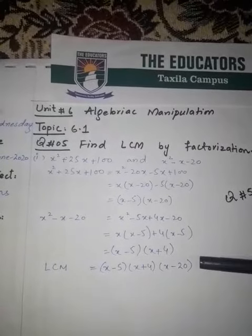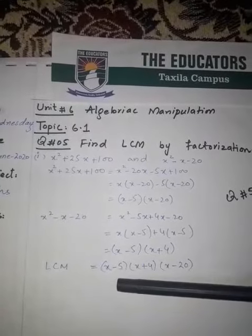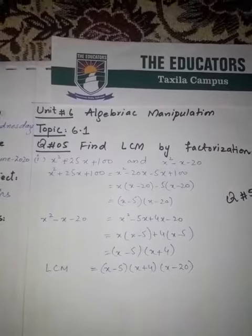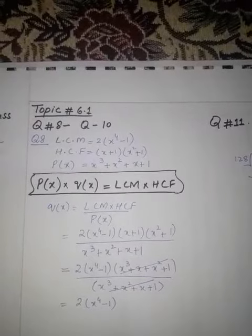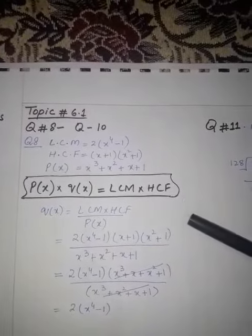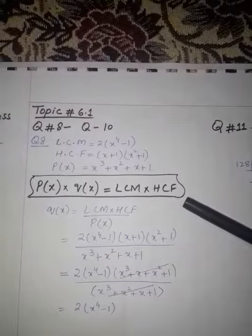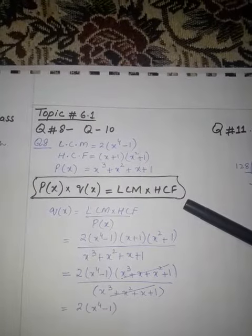Right, like this: x minus 5 is common, then x plus 4 and x minus 20. From question number 8 to question number 10 there is a single formula: p of x multiplied by q of x.